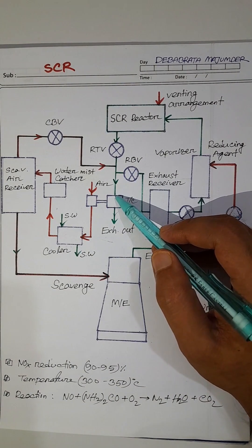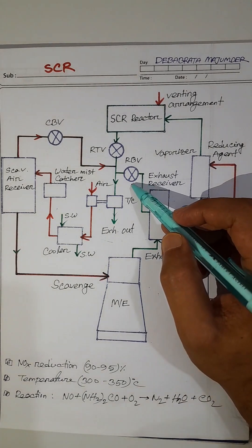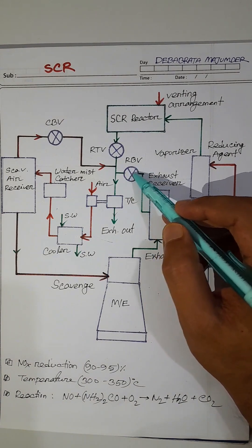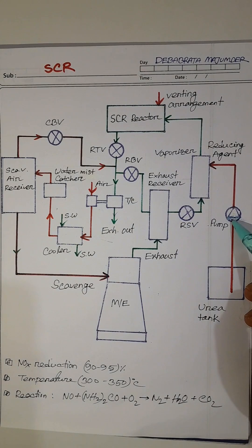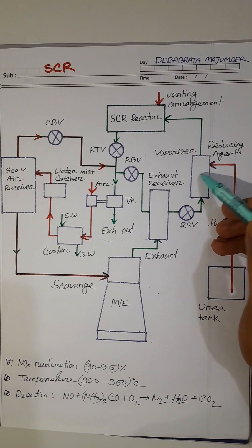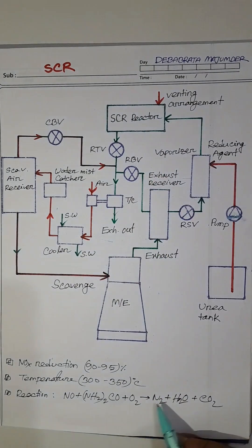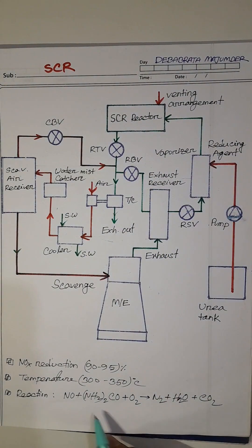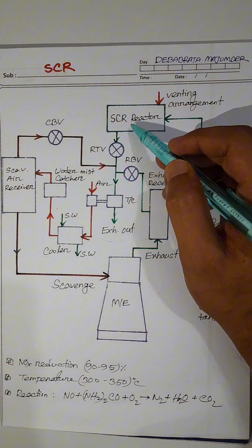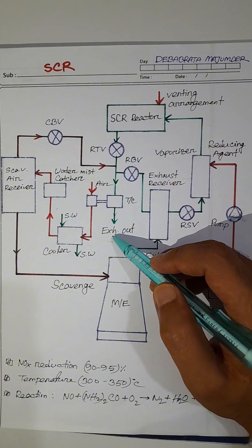Whenever the exhaust temperature reaches the desired 300 to 350 degrees centigrade, the SCR control unit gives a signal to the valve, the valve is closed, and the control unit starts the pump. Through this pump, urea is injected and mixed with the exhaust gas, passing through the reactor. Here chemical reaction occurs which converts urea and NOx into nitrogen gas — meaning NOx is converted into nitrogen gas and exhaust gas goes out.